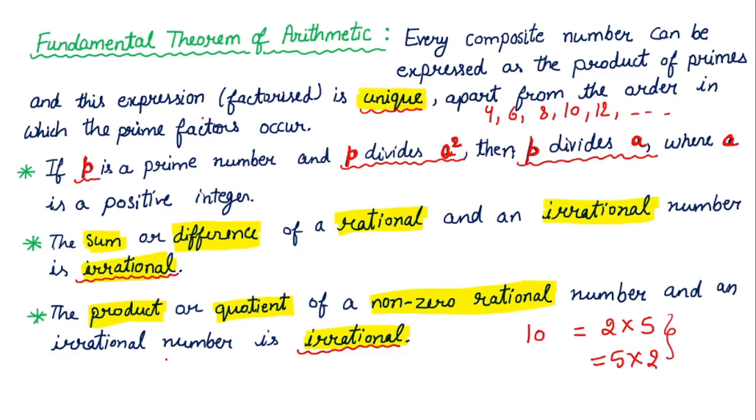Apart from the order. If we don't see the order, we don't see the order that we have to take 2 into 5 or 5 into 2. But this expression is 5 into 2. We can take 5 into 2. I can't take 5 into 3 or 5 into 4. This will be unique. This theorem tells us.